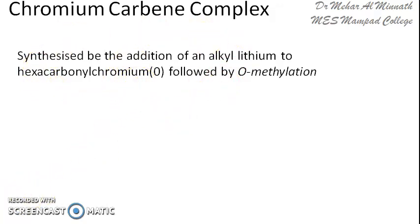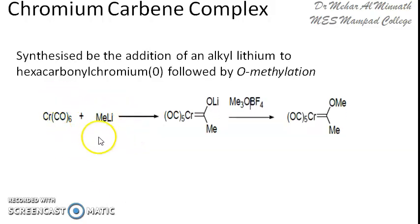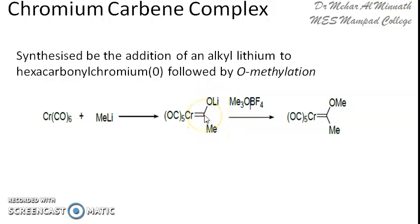It is synthesized by adding alkyl lithium to hexacarbonyl chromium, followed by O-methylation. The alkyl lithium used here is methyl lithium. Here you have hexacarbonyl chromium — Cr(CO)6 — and the methyl lithium gets added onto one of the carbonyl groups, giving Cr(CO)5, with lithium going onto the oxygen and the methyl group onto the carbon. This is then followed by methylation, where the lithium is replaced by a methyl group.